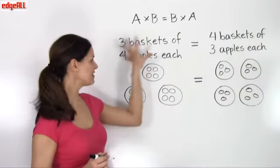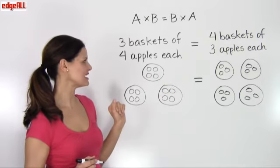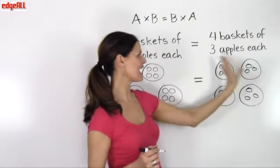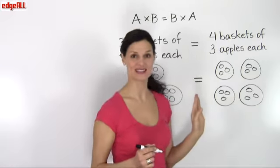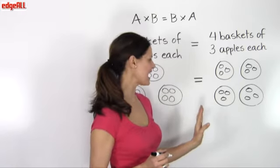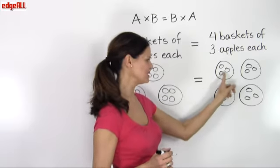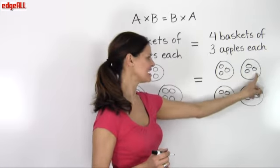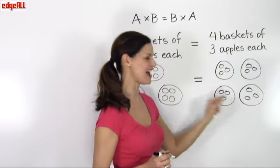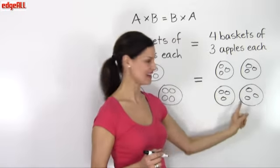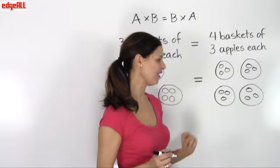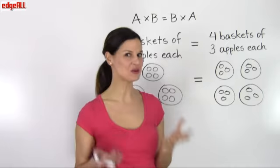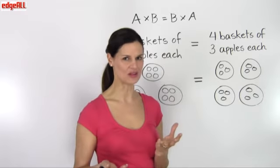So that's three baskets of four apples each. But in this case where I have four baskets of three apples, again I have one, two, three, four, five, six, seven, eight, nine, 10, 11, 12. So in both cases, I have 12 apples.